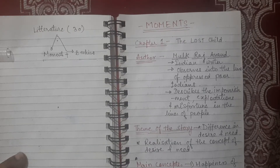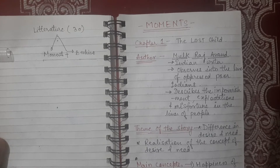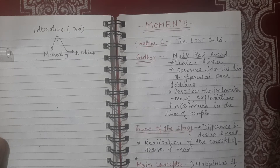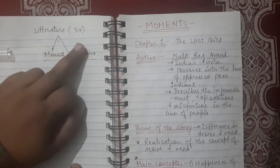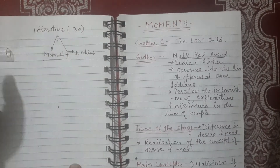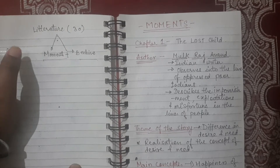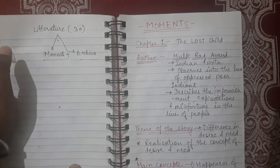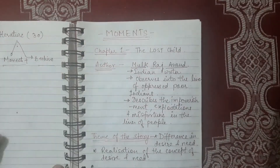Hello students, good morning everyone. I hope you all are safely fighting against coronavirus and staying at home. Now in the previous lecture, you have been told that the literature portion contains only 30 marks, which contains two books, that is Moments and Beehive. Today we are going to start the first chapter of Moments, that is Chapter 1, The Lost Child.